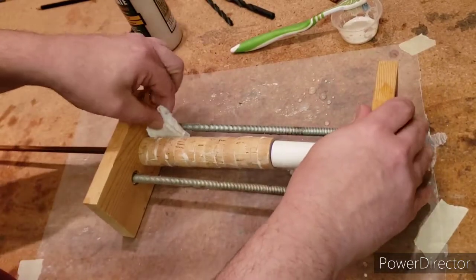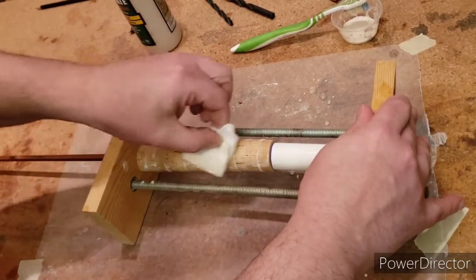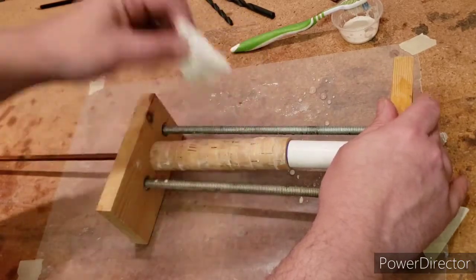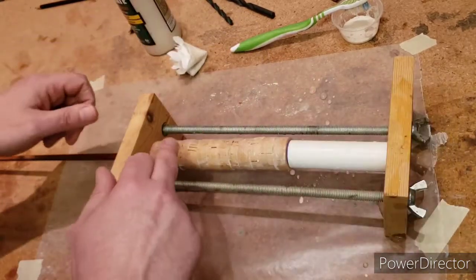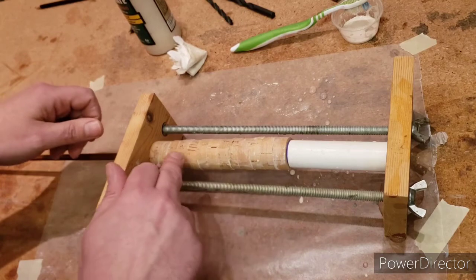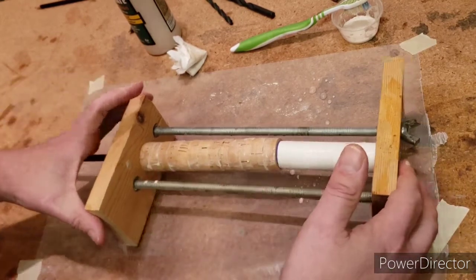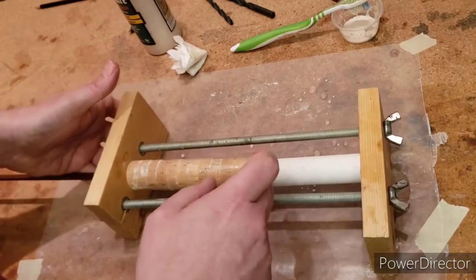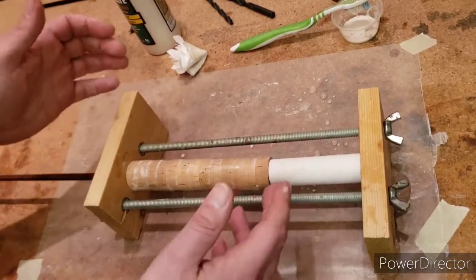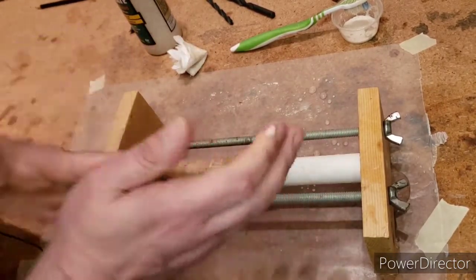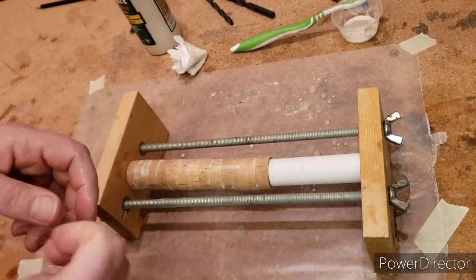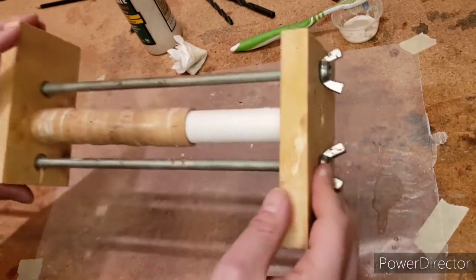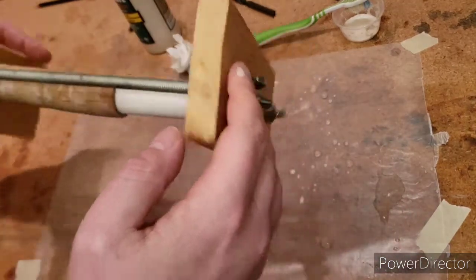I think I got most of the globs cleaned up. Now I can take a look to see if I need to apply any more pressure. I should have a pretty good even compression. That looks good. I'm going to give this a good 24 hours to set up and then I can put it on the lathe. We can do another video on turning grips.